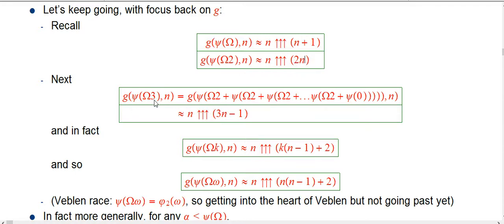Now what about going to omega 3? Just still doing kind of small steps. Well, by definition, you start with psi of 0, add that to omega 2 and put it in psi, and then you add that to omega 2 and put it in psi, etc. You do that n times. And it's not too hard to believe if we just look at the pattern here. n plus 1 going to 2n, we added an n minus 1. And then we're actually going to add another n minus 1. So we're going to get up to n triple up 3n minus 1.